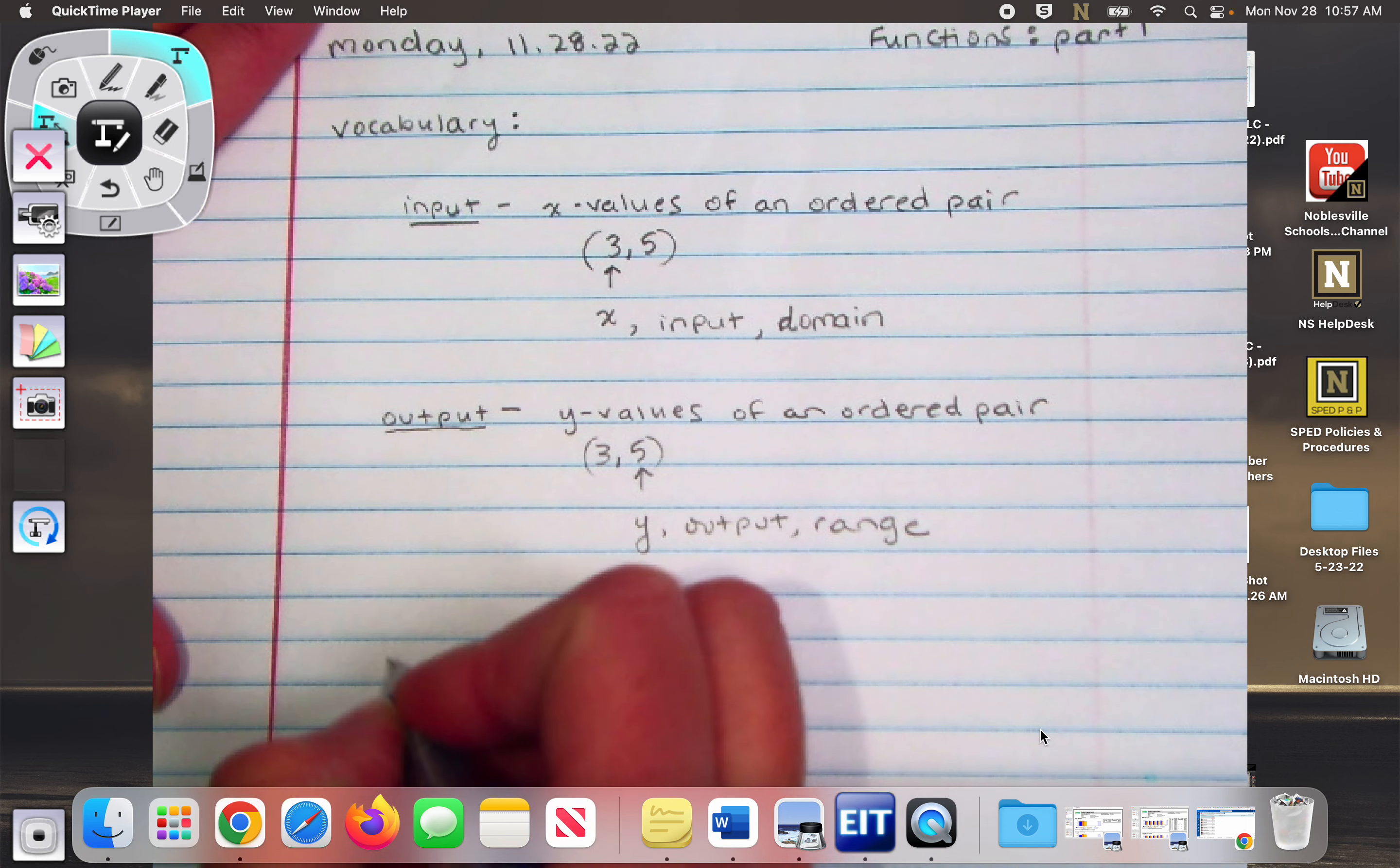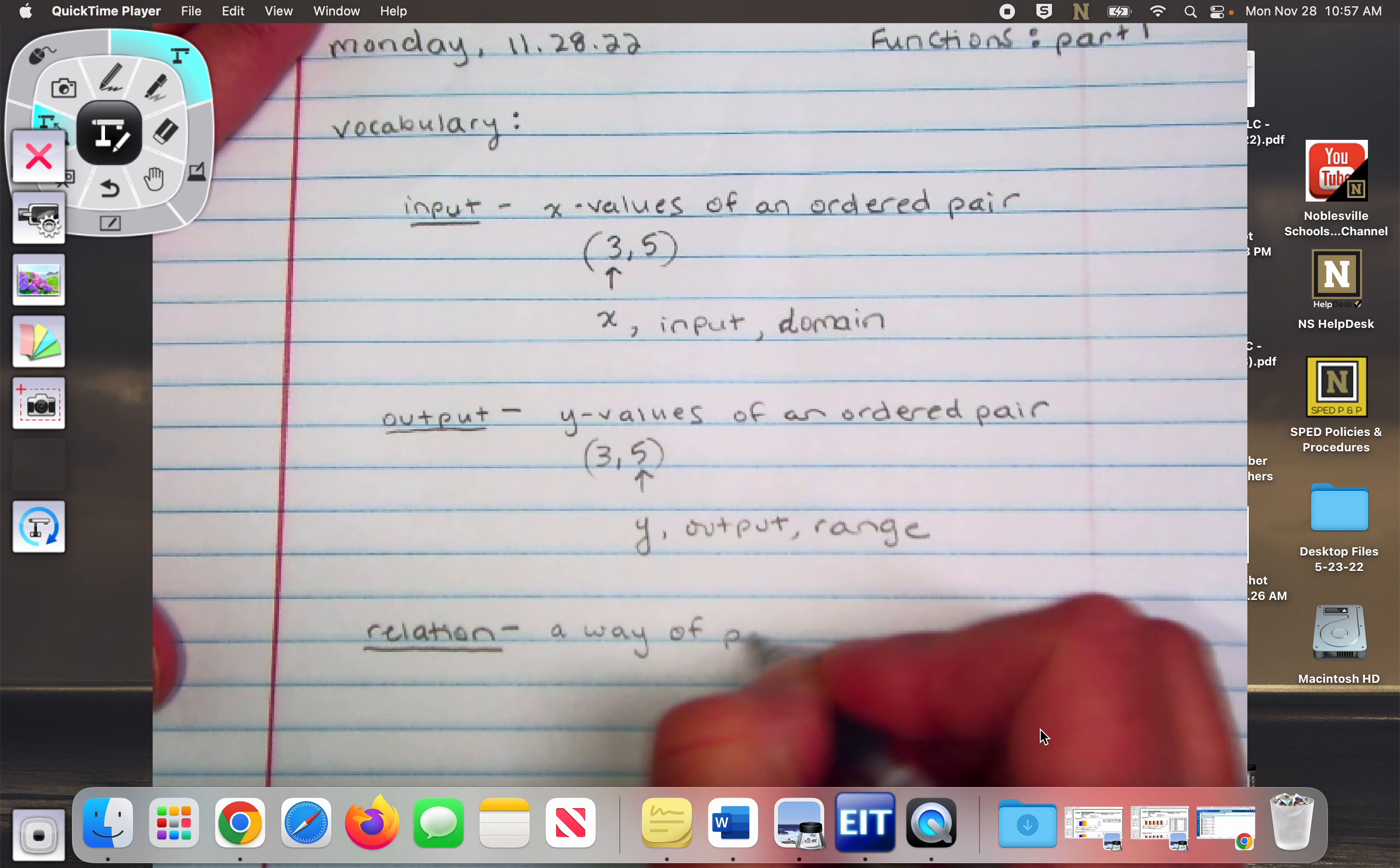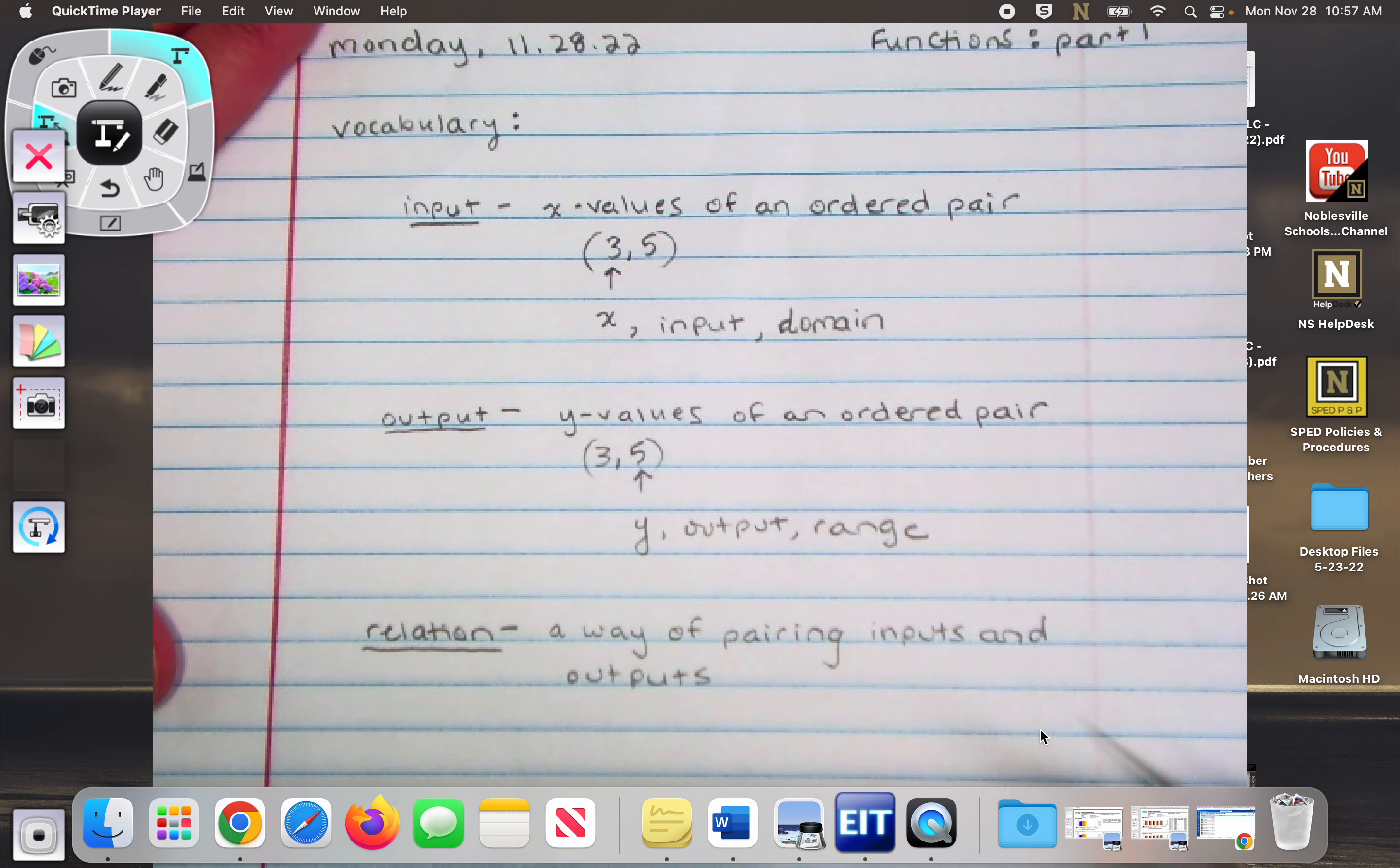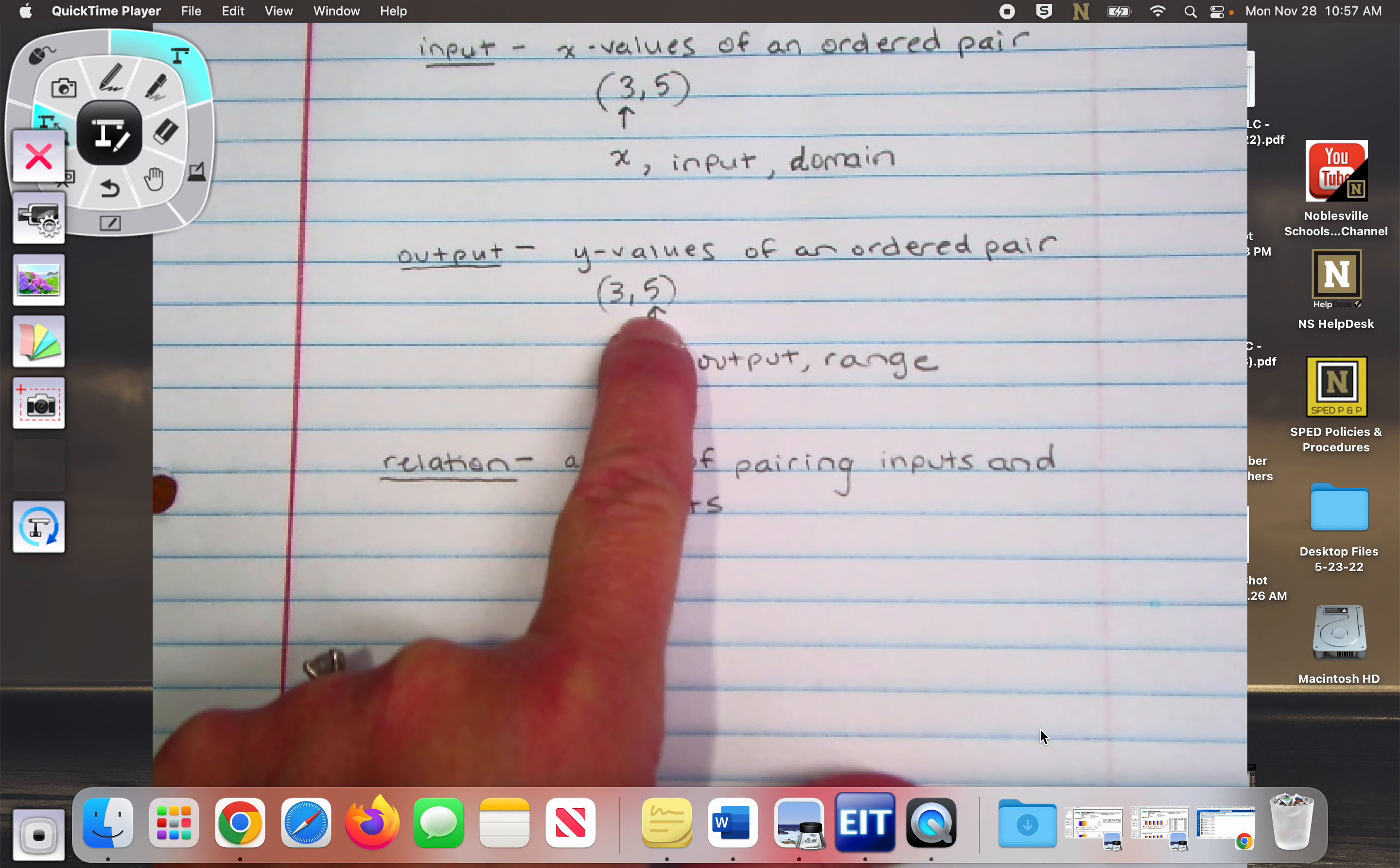So then we have a relation, which is a way of pairing inputs and outputs. So we have inputs, we have outputs.